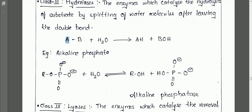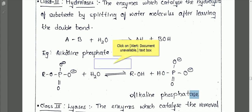The general formula is: A-B + H2O → AH + BOH. The water molecule is split into one hydrogen and one OH molecule; the hydrogen is taken by component A, and the OH molecule is taken by component B.